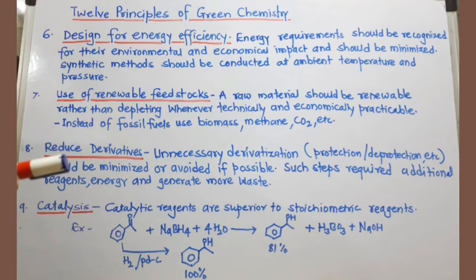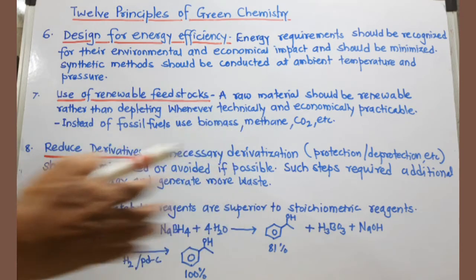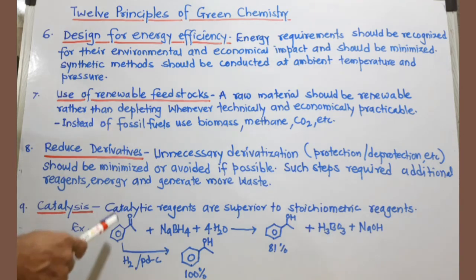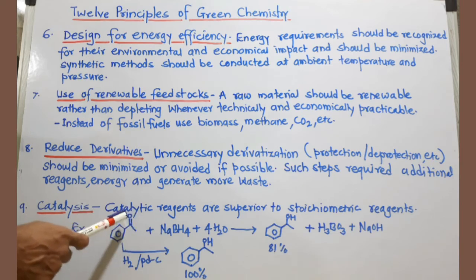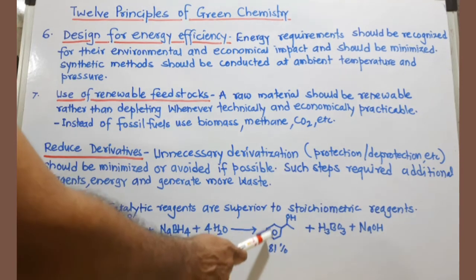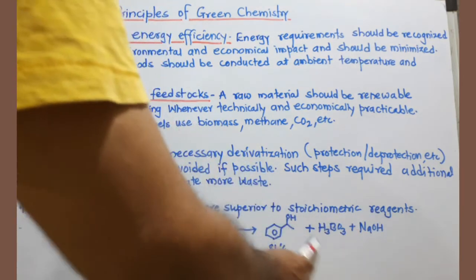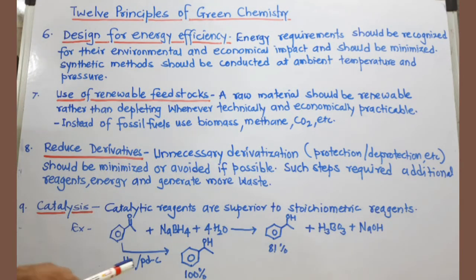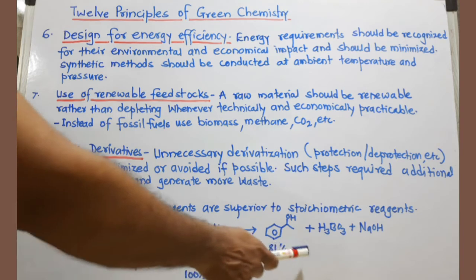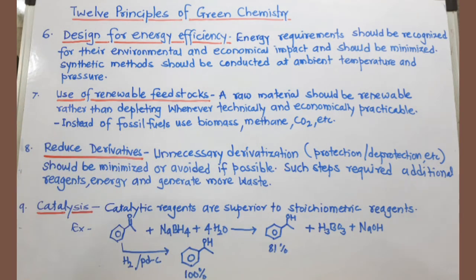The ninth principle is catalysis. Catalysts are always beneficial because they can be reused, reduce reaction time, and increase reaction speed. For example, reducing a ketone with sodium borohydride gives only 81% yield of a secondary alcohol with significant waste. But performing the same reaction using hydrogen gas in the presence of a catalyst gives 100% yield with no waste. Catalysis is important in green chemistry to avoid waste and protect the environment.